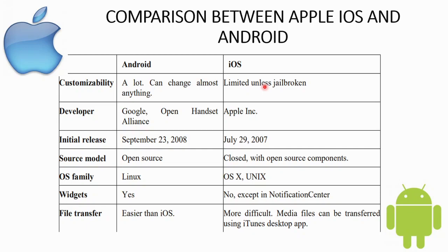Overcoming iOS restrictions through jailbreaking is not a legalized method. The Android developer is Google — it is open source. The iOS developer is Apple Incorporation. Android's initial release was September 23, 2008, and iOS was 2007. The source model for Android is open source, but iOS is not open source — it is closed with some open source components.